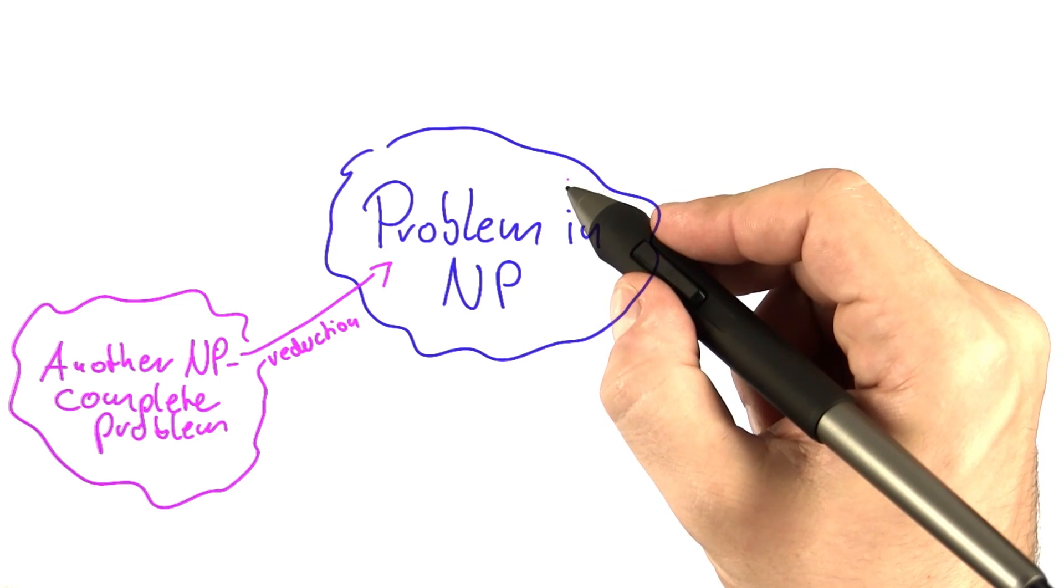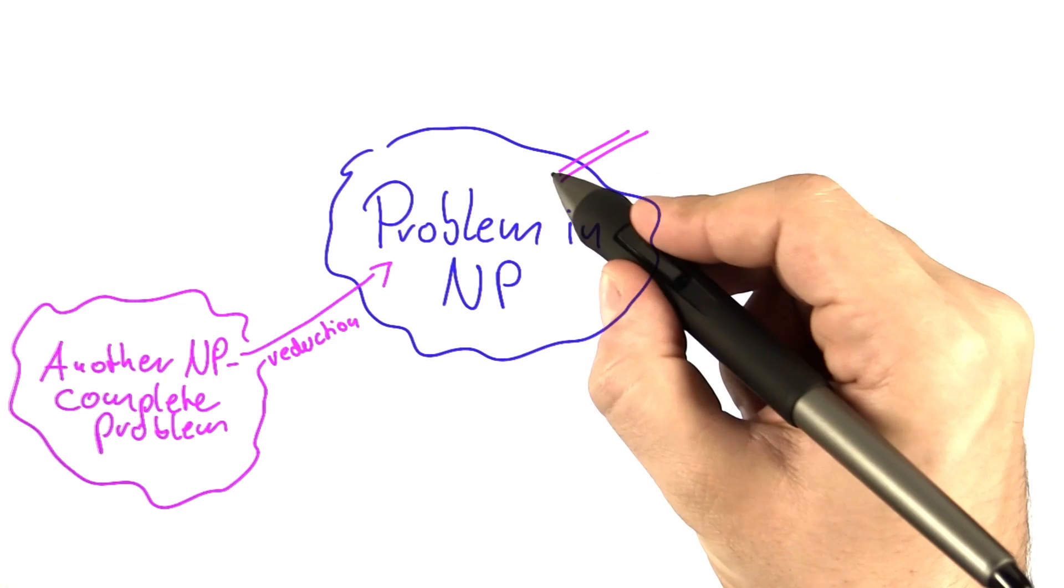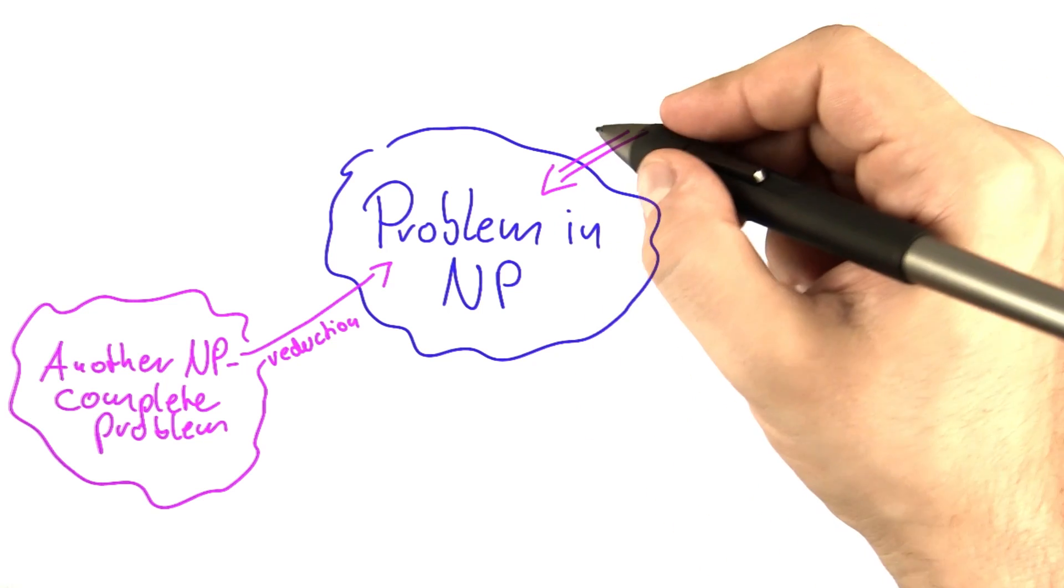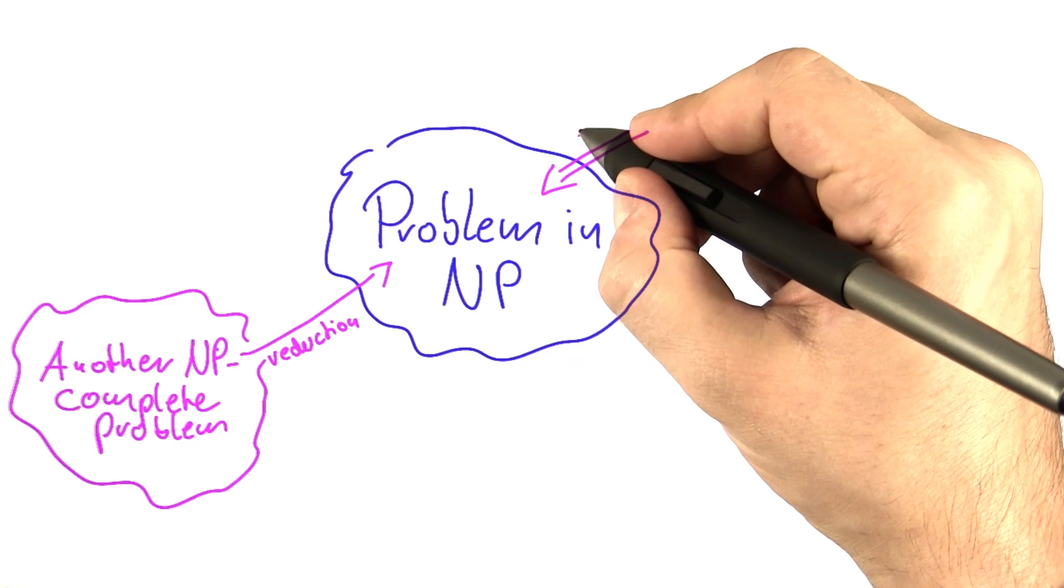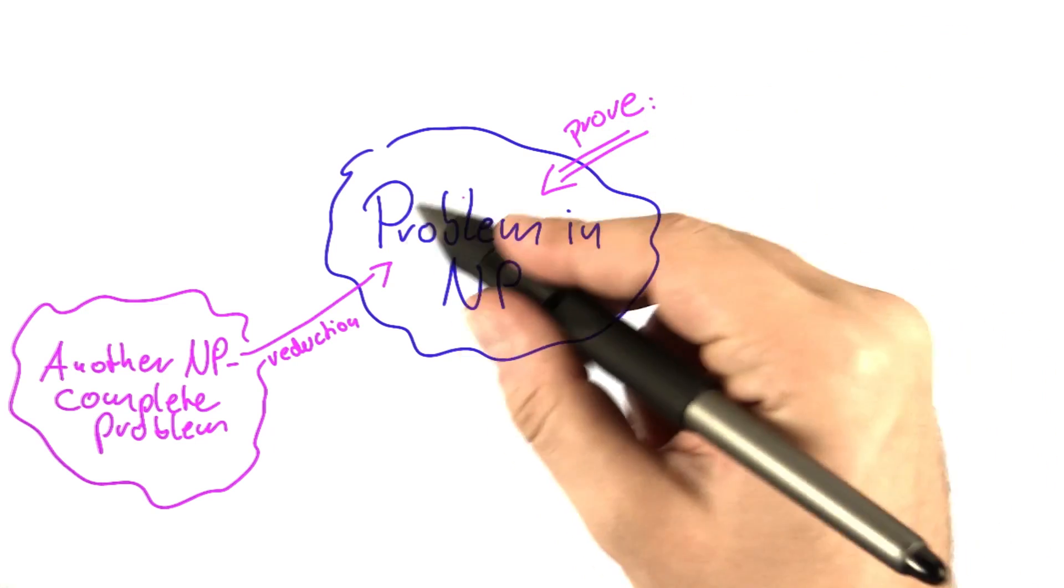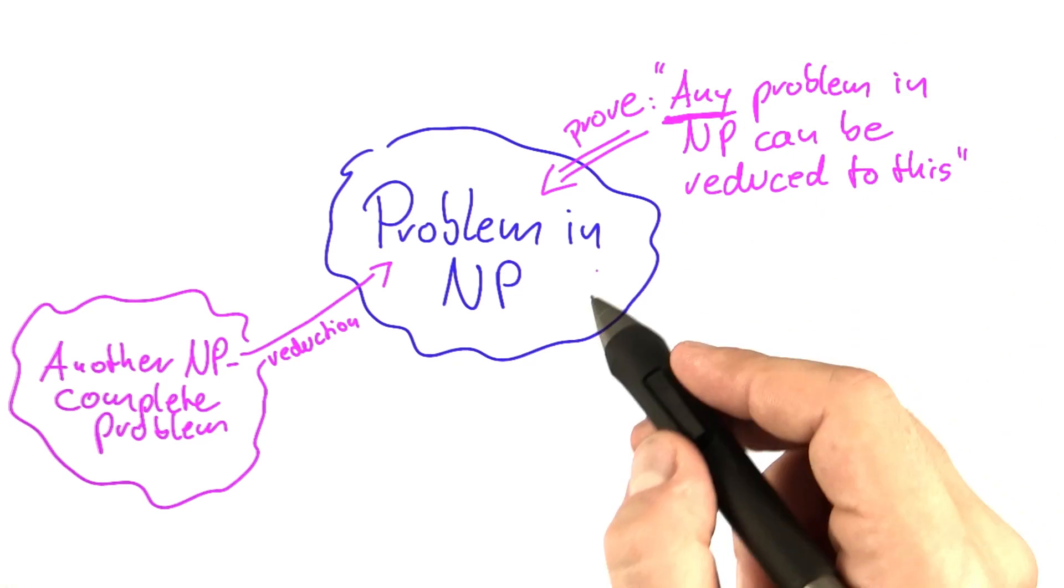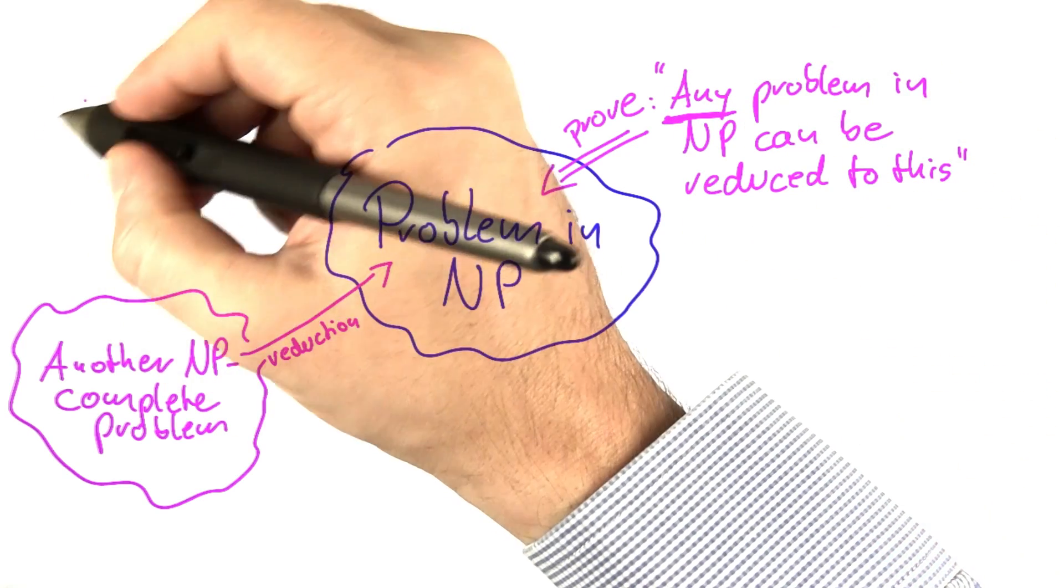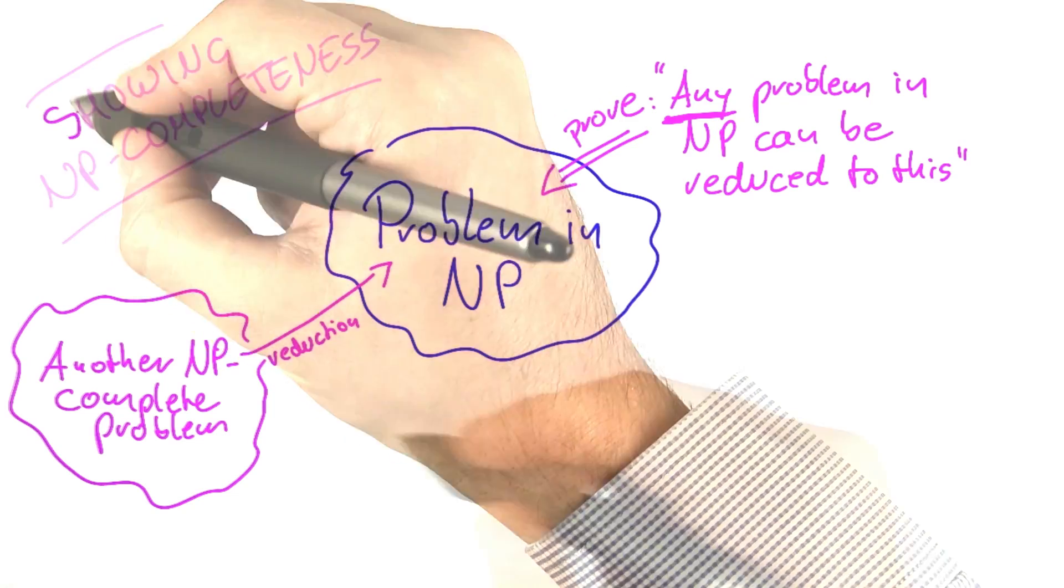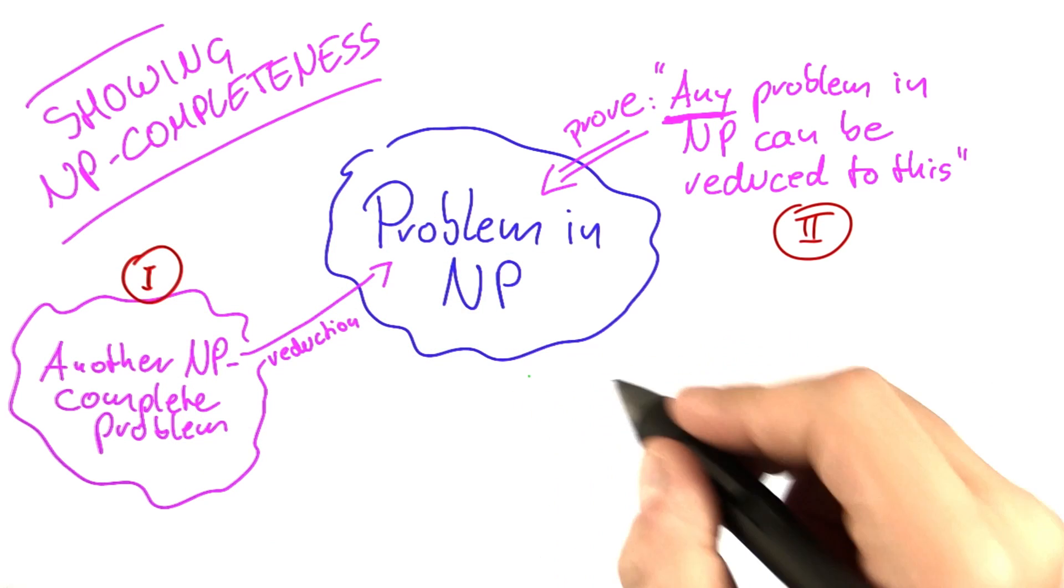The other way is to use the definition of NP completeness that we just looked at. You would have to prove mathematically that any problem in NP can be reduced to your problem. The emphasis here is on any problem, because otherwise it wouldn't be NP complete. Those are the two possible ways you could show NP completeness, which we'll call approach number one and approach number two.